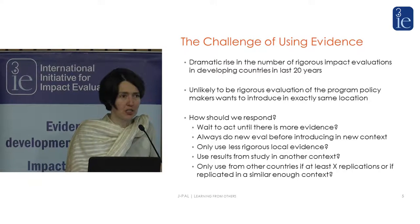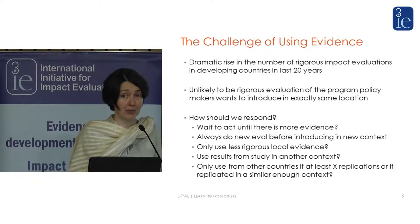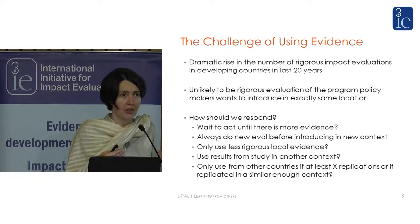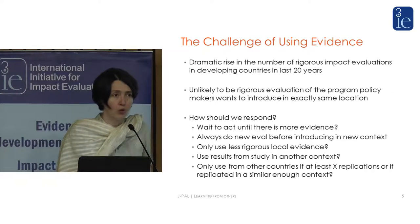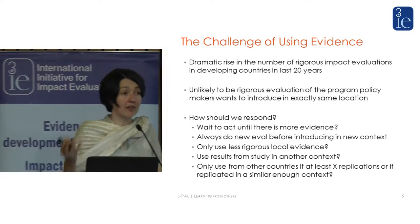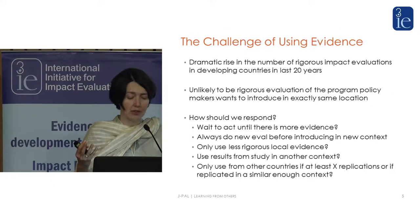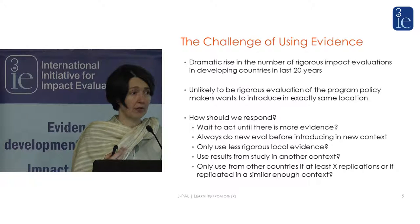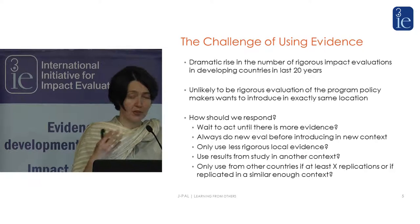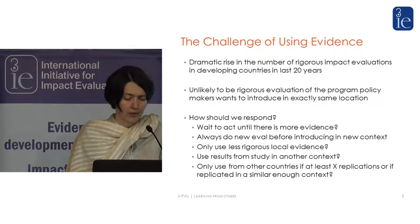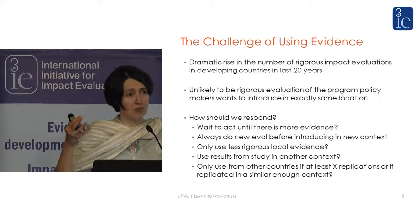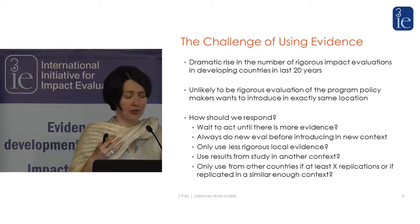You could decide to wait until there was an impact evaluation in your context and not do anything until then. You could say you should always do a new rigorous impact evaluation in your context before you do anything. Or you could say you don't have time, you've got to do something now, so you'll use local evidence even if it's not rigorous. Or should you try and use the results from another context and hope that it's relevant for you?